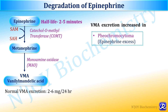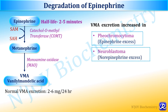VMA excretion is increased in conditions of pheochromocytoma, where there is epinephrine excess. Pheochromocytoma is a type of endocrine tumor that grows from cells called chromaffin cells, and it is a tumor of the adrenal gland. VMA excretion is also increased in neuroblastoma due to increased synthesis of norepinephrine.